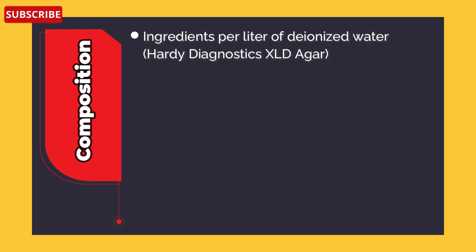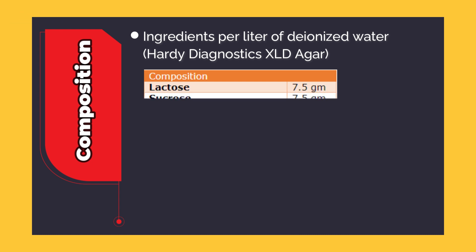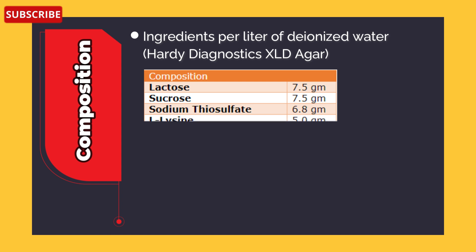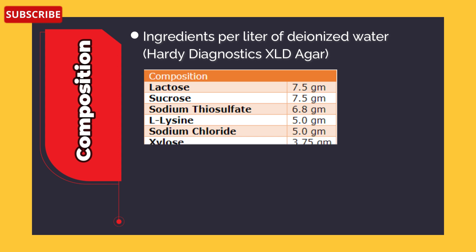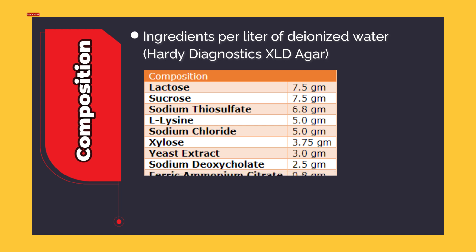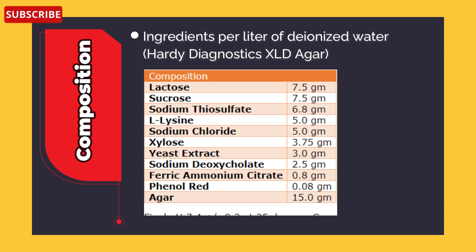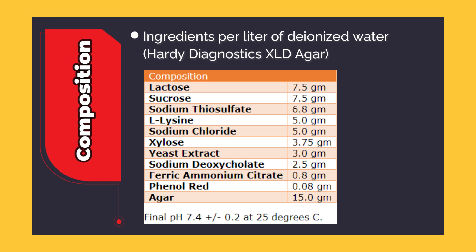Composition of XLD agar per liter of deionized water: Lactose 7.5 g, Sucrose 7.5 g, Sodium thiosulfate 6.8 g, Lysine 5 g, Sodium chloride 5 g, Xylose 3.75 g, Yeast extract 3.0 g, Sodium deoxycholate 2.5 g, Ferric ammonium citrate 0.8 g, Phenol red 0.08 g, Agar 15 g. Final pH 7.4 at 25°C.